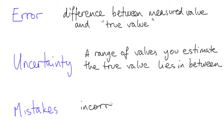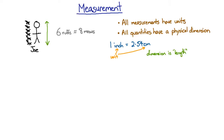Mistakes are when you perform a measurement incorrectly. Scientific methods try to minimize the possibility of mistakes as much as possible. We'll discuss each of these terms in more detail in the following material. Now the first thing we're going to go through is the uncertainties in your measurements.